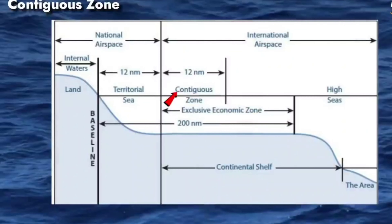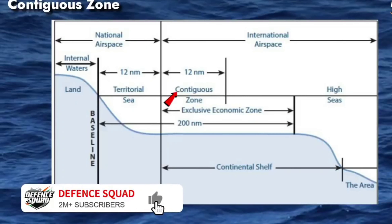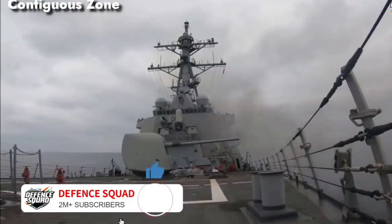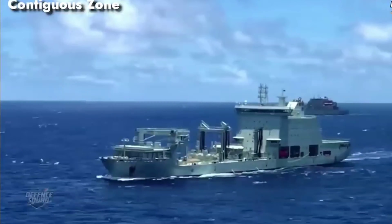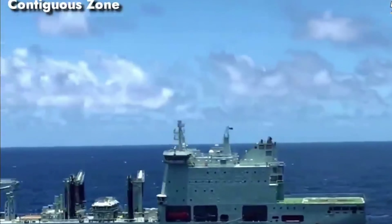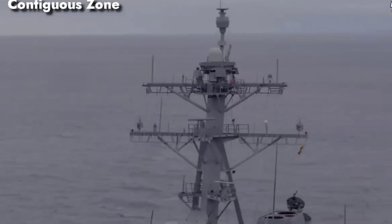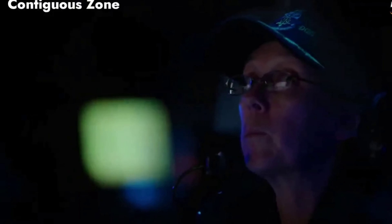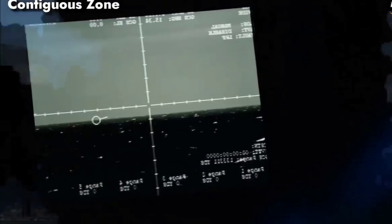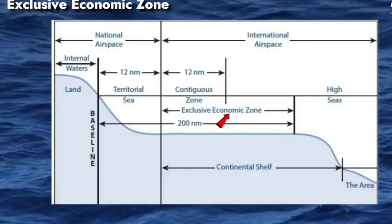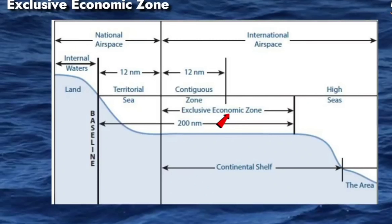The contiguous zone is a band of water extending from the outer edge of the territorial sea up to 24 nautical miles — that is 44.4 kilometers — from the baseline. Within this zone, a state can exert limited control for the purpose of preventing and punishing violations of its customs, fiscal, immigration, and sanitary laws.